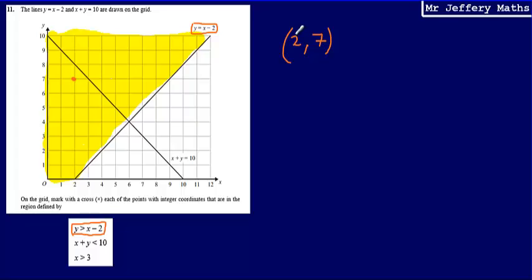Now, the x coordinate here is 2, and so 2 minus 2 equals 0. We can see that the y coordinate is 7, and so that means that we are correct, the y coordinate, 7, is greater than the x coordinate, 2 minus 2.